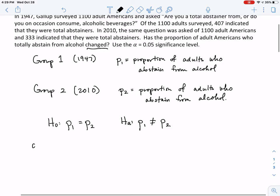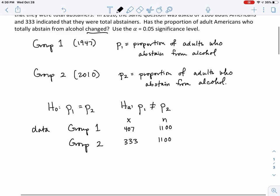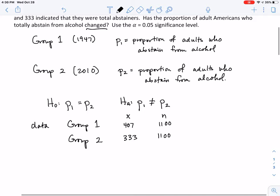Now, our data for group one. The number of successes was 407 said that they abstain, out of a total of 1,100. And in group two, there were 333 who said they abstained, and that also had 1,100. It should be noted you do not need to always have the same sample size.